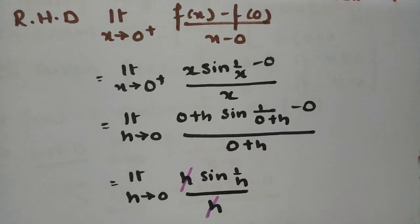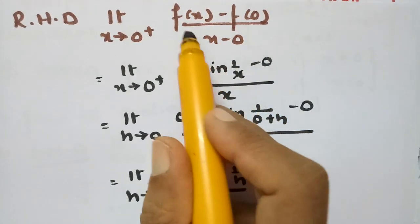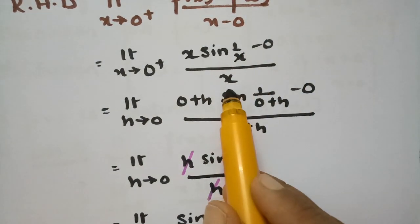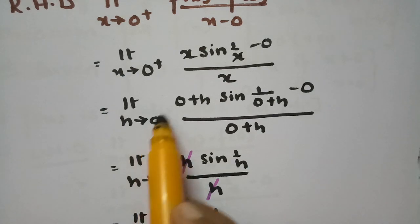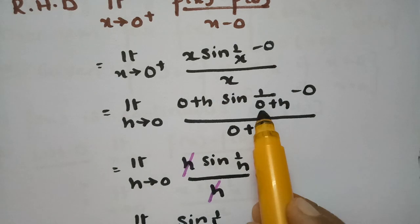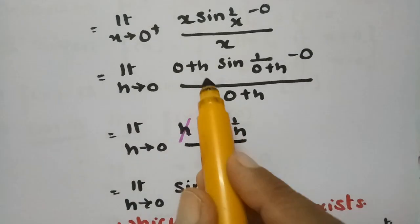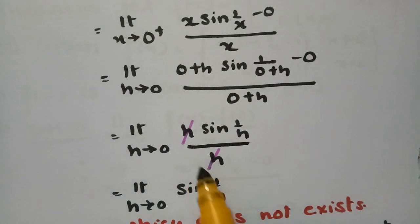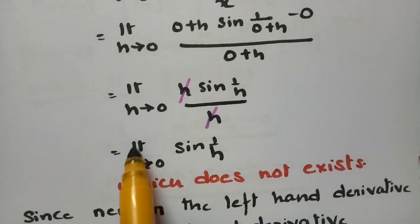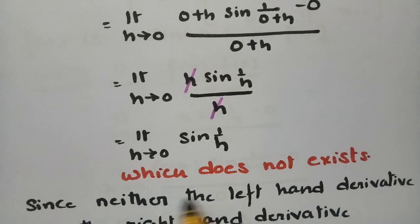For the right-hand derivative: limit as x → 0⁺ of [f(x) - f(0)] / [x - 0]. With f(x) = x·sin(1/x) and f(0) = 0, substituting x = 0 + h gives (0+h)·sin(1/(0+h)) / (0+h). Cancelling h from numerator and denominator leaves sin(1/h). As limit h → 0, sin(1/h) does not exist.